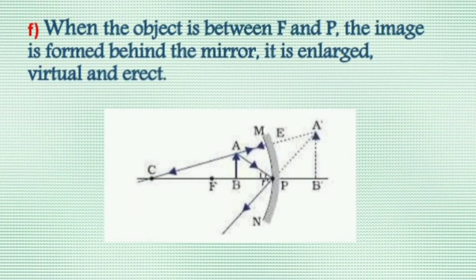Case six: object placed between focus F and pole P. In this case, the image is virtual, erect, and magnified.